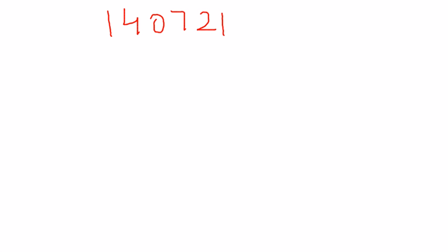Let's take an example where the number is 1, 4, 0, 7, 2, 1 — that is, 140721. We'll check if this particular number is divisible by 7 or not.